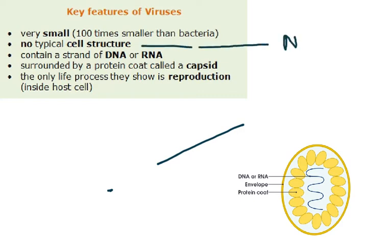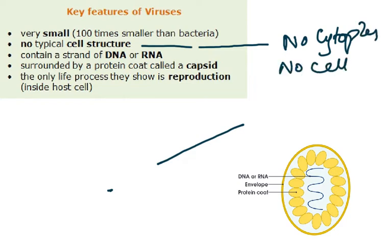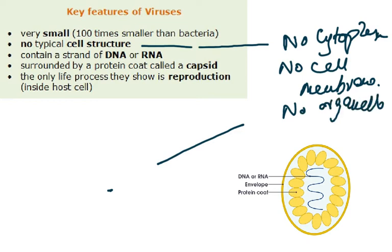There is no typical cell structure. A virus has no cytoplasm, no cell membrane, no cell wall, and because it has no cytoplasm it has no organelles and no mitochondria. So it doesn't respire, doesn't have nutrition, doesn't even grow. The only reason we study it in biology is because it can reproduce inside another living cell. It has a DNA or an RNA.